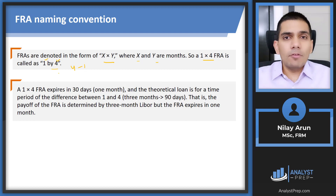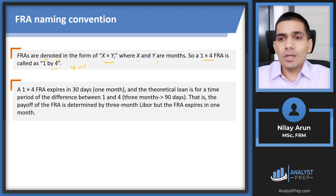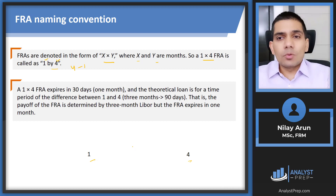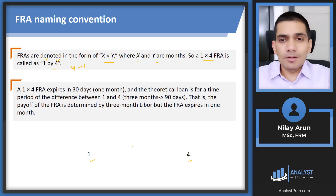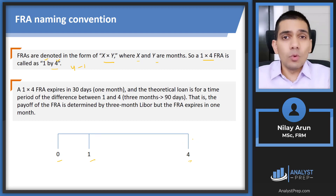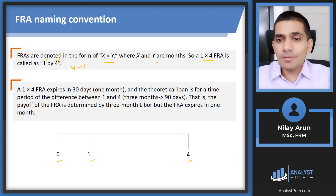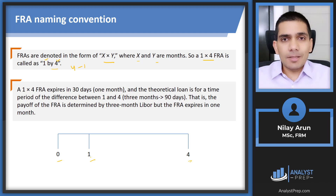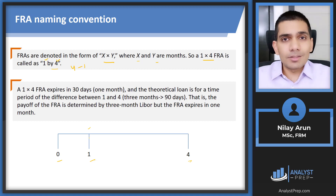For a 1×4 FRA, write down 'one' and 'four,' then put a zero in front and convert it into a timeline: 0 — 1 — 4. Zero is when you enter the FRA (the initiation date), one is when the FRA matures, and four is when the theoretical loan ends. So the loan runs from period one to four, which is four minus one equals three months.